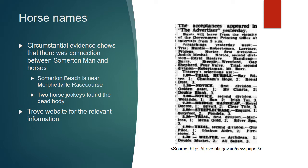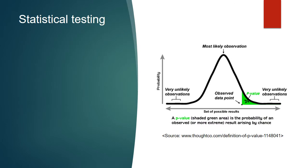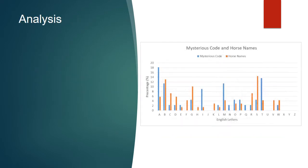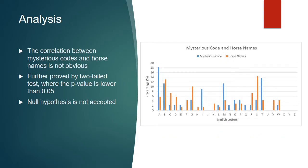We used the website Trove to find relevant horse names. Statistical testing is how we proved or disproved whether it was horse names, using a two-tailed t-test p-value test. Our null hypothesis was that the group of letters are horse names; the alternative hypothesis was that they are not. The correlation between the mysterious code and horse names is not obvious, and the p-value was lower than 0.05, so the null hypothesis is rejected.